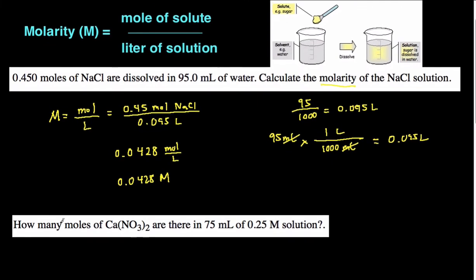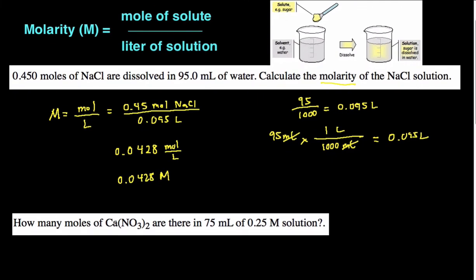This next example says how many moles of calcium nitrate are there in 75 milliliters of 0.25 molar solution. So this time we're given the volume and we're given the molarity. We're trying to figure out the moles.